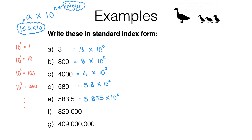Try the last two questions for yourself — pause the video and have a go. Here are the answers. For 820,000: I'm going to write that as 8.2, and the 8 needs to go 5 place value columns to the left from the units column, so I multiply by 10 to the power of 5. Finally, question G: the decimal point goes to give 4.09, and the 4 in the units column needs to move 8 place value columns to the left, so that's 10 to the power of 8.